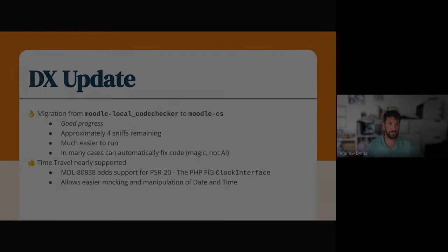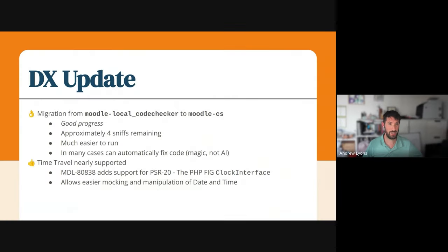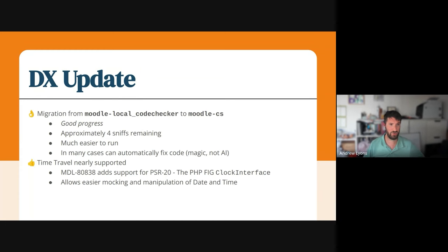From a developer experience update, which is our new Sprintly update, we are continuing with our migration from the Moodle local code checker Moodle plugin to the Moodle coding style ruleset for PHPCS. We've made really good progress — we've gone from around 15 to 20 rules, and we're now down to the last four remaining SNFs, which I hope to finish in the next three weeks.